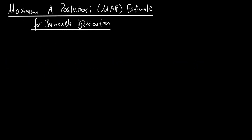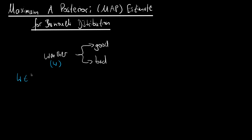We're talking about the Bernoulli distribution — random variables that can take only two states. We consider the example of the weather, which can be good or bad. The weather, denoted as w, can take the states good and bad, encoded as zero or one. Based on this, w is distributed according to a Bernoulli with a certain parameter theta, which is the probability of observing good weather.